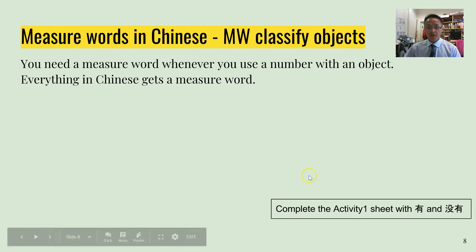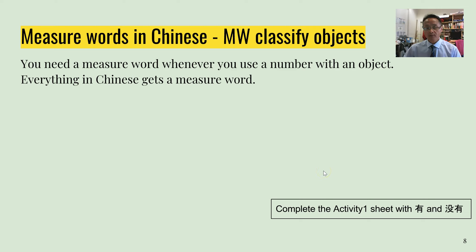同学们好! Now, to continue on with our measure words. Our measure words basically are to classify objects — we'll be referring to them as MW for measure words.